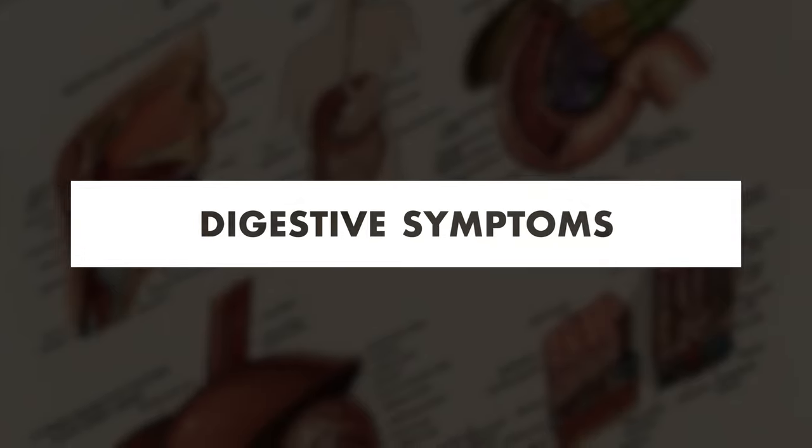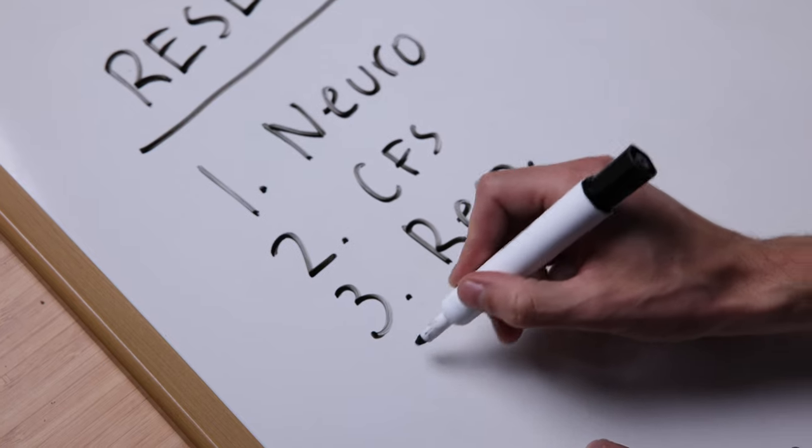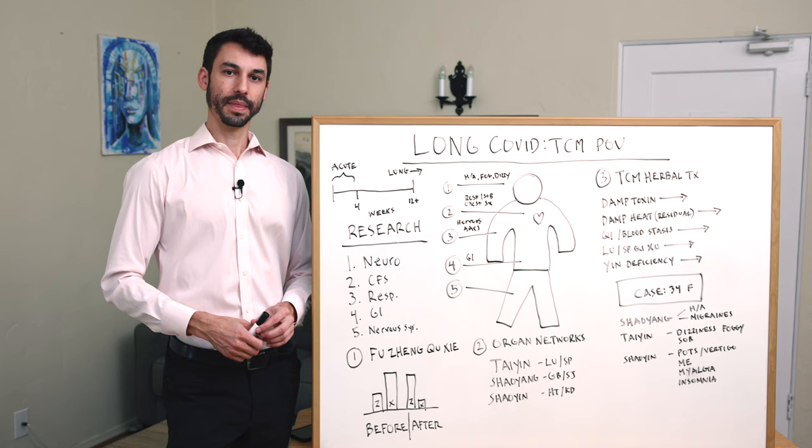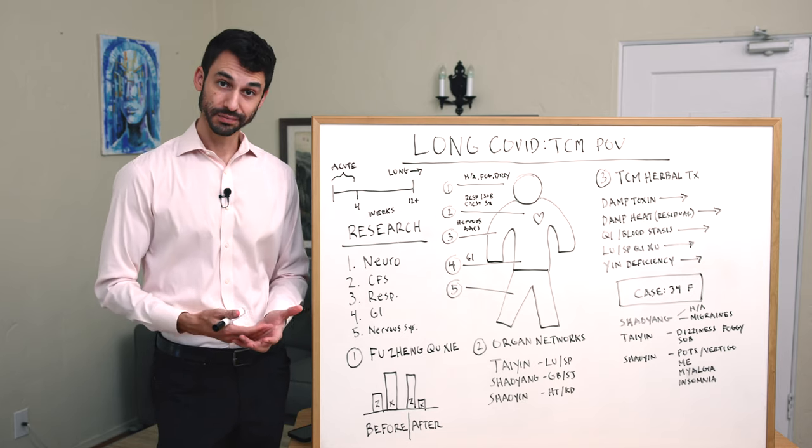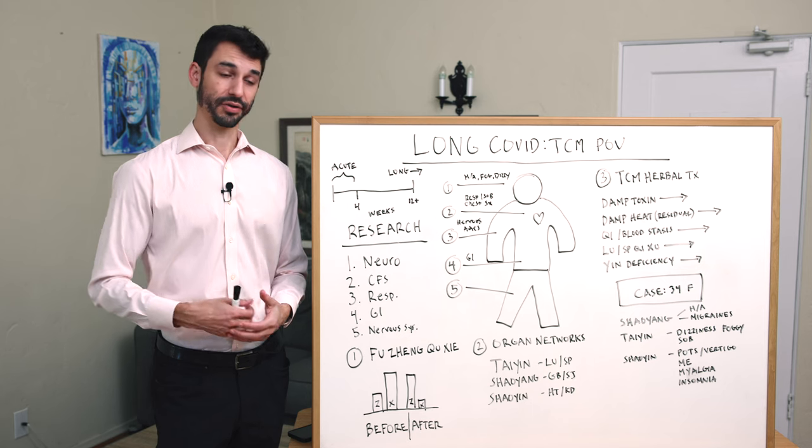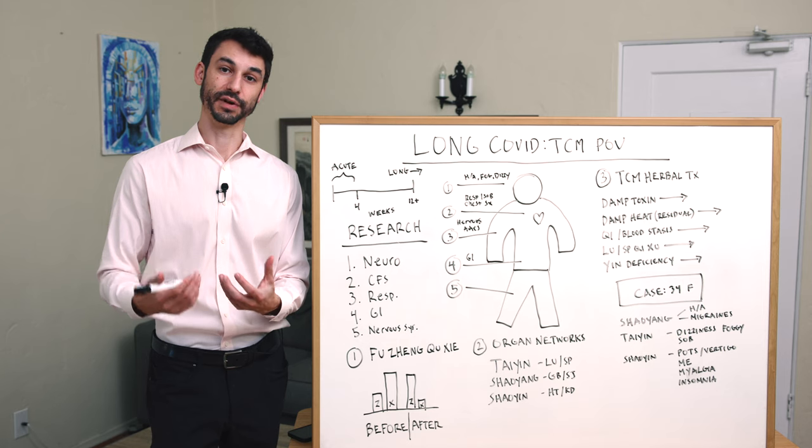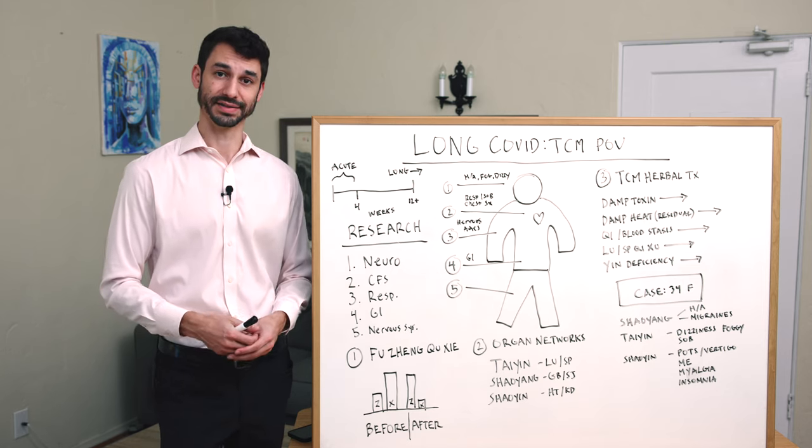The fourth is digestive symptoms. I see people coming in with wandering body pains, maybe in the nervous system bucket. They come in with altered bowels in general. They're having upper GI issues, lower GI issues, still having diarrhea or severe bloating or wandering abdominal pains.